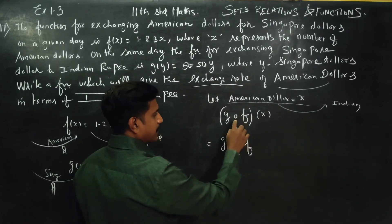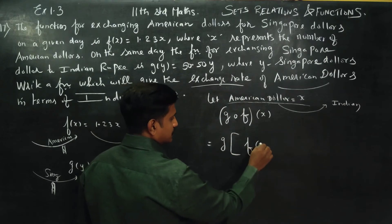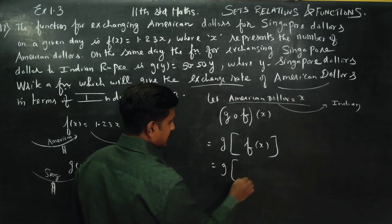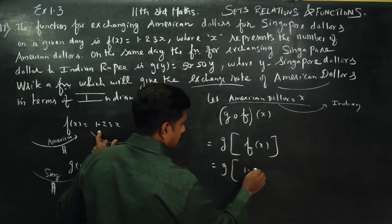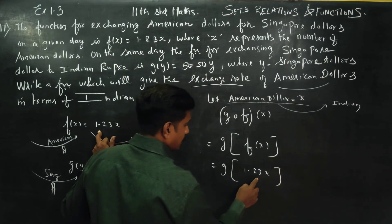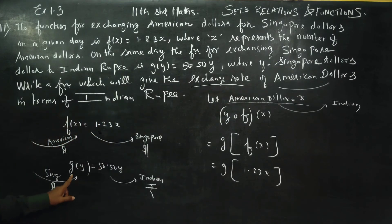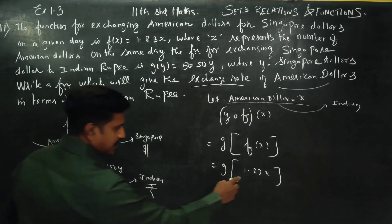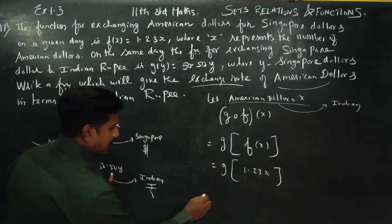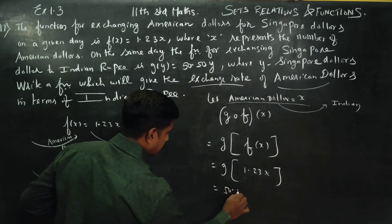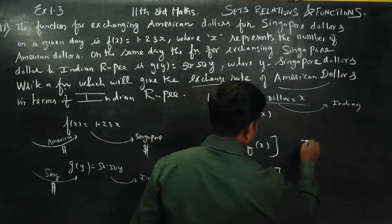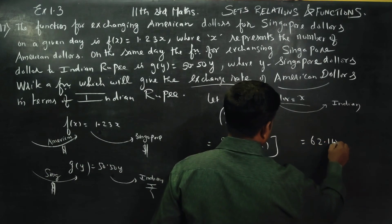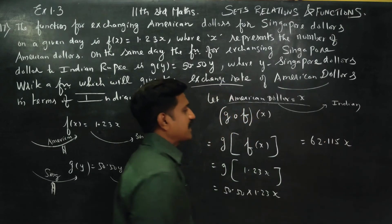F of X equals 1.23x. Now applying G: G of F of X equals 50.50 into 1.23x, which equals 62.115x. This is the exchange rate.